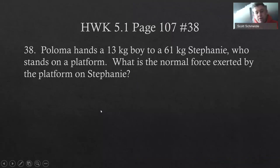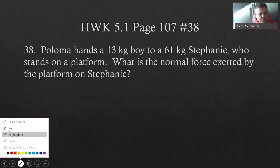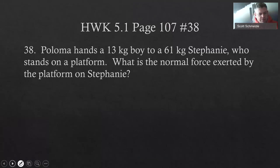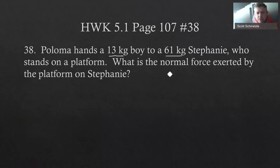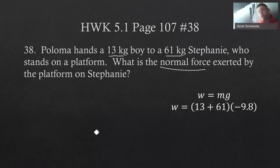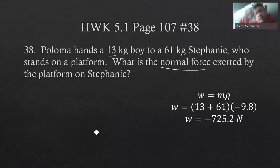Start off with homework. The first problem: Paloma hands a 13-kilogram boy to 61-kilogram Stephanie, who stands on a platform. We want to figure out the normal force exerted by the platform onto Stephanie. We've got a 13-kilogram boy and a 61-kilogram Stephanie. If we just figure out their weight, that's 13 plus 61, so 74 times negative 9.8. Their weight will be negative 725.2 Newtons — weight going downwards, that's why it's negative.